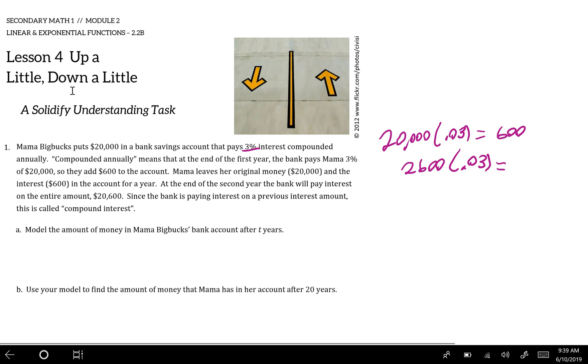So as we've talked about, a faster way of doing this than multiplying this and then adding it to twenty thousand is to just multiply by 1.03.